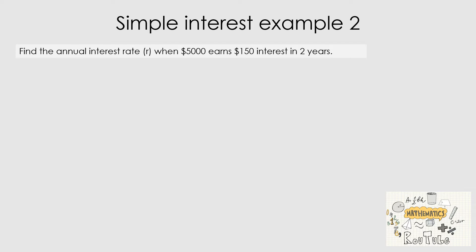Let's look at our second simple interest example: find the annual interest rate when $5,000 earns $150 interest over two years. Writing down the formula I = PRT ÷ 100, we have our principal P of $5,000, and our I value of $150 — that's the interest already earned. Our time T is 2 years. The rate R is the only unknown.